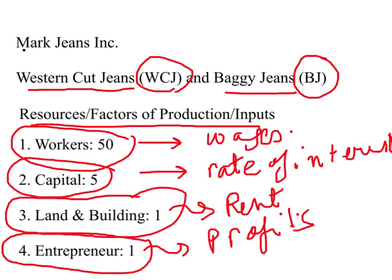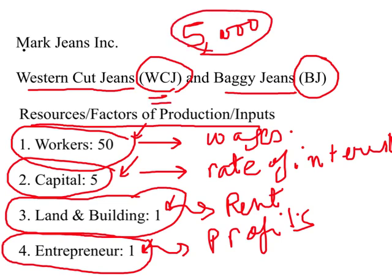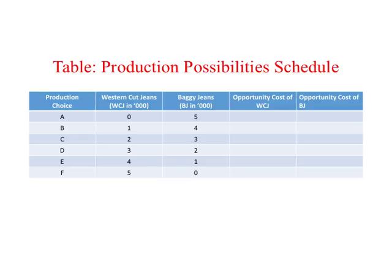We require factors of production to produce Western Cut Jeans and Baggy Jeans. Since there is a limited number of workers — 50 workers, five machines, one building, and one entrepreneur — there is a maximum amount this firm can produce. Let us assume that maximum is 5,000 jeans on a given day, in any combination of Western Cut Jeans and Baggy Jeans. Now let us look at the production choices available to Mark Jeans Incorporated.